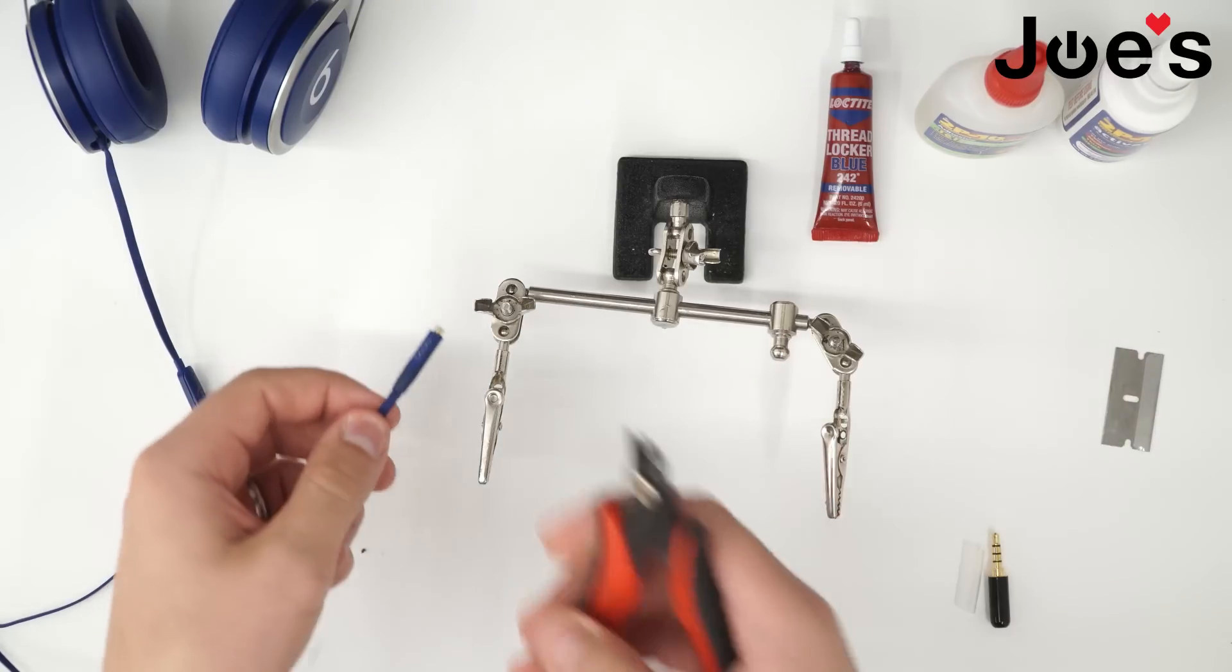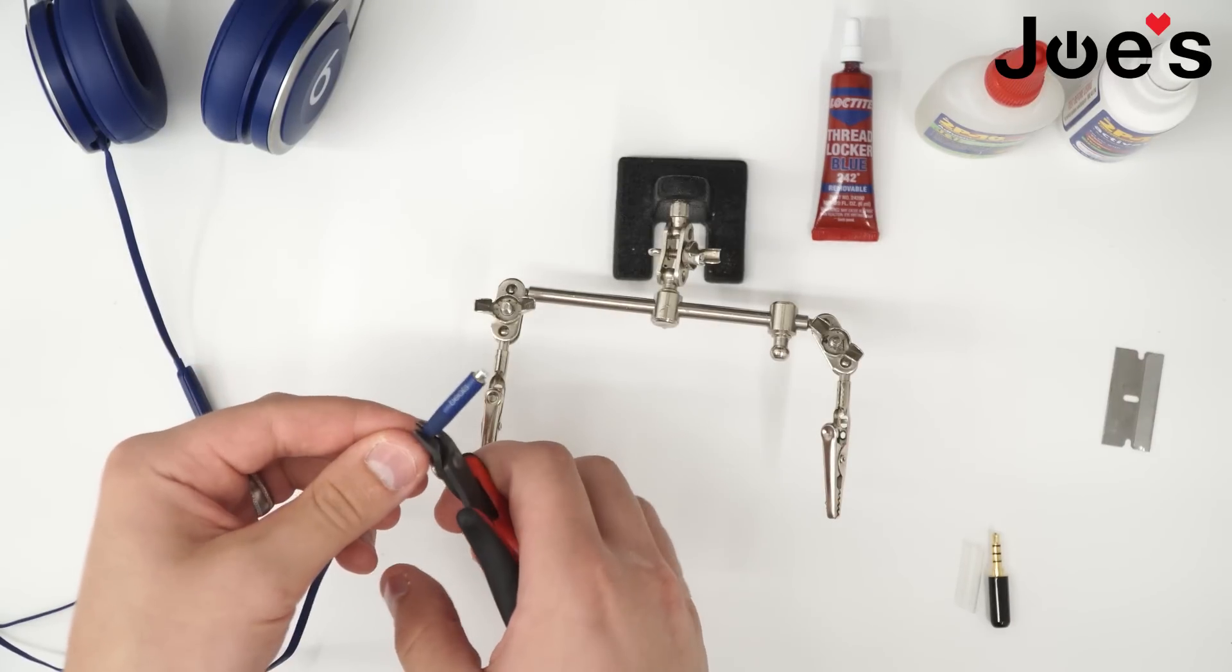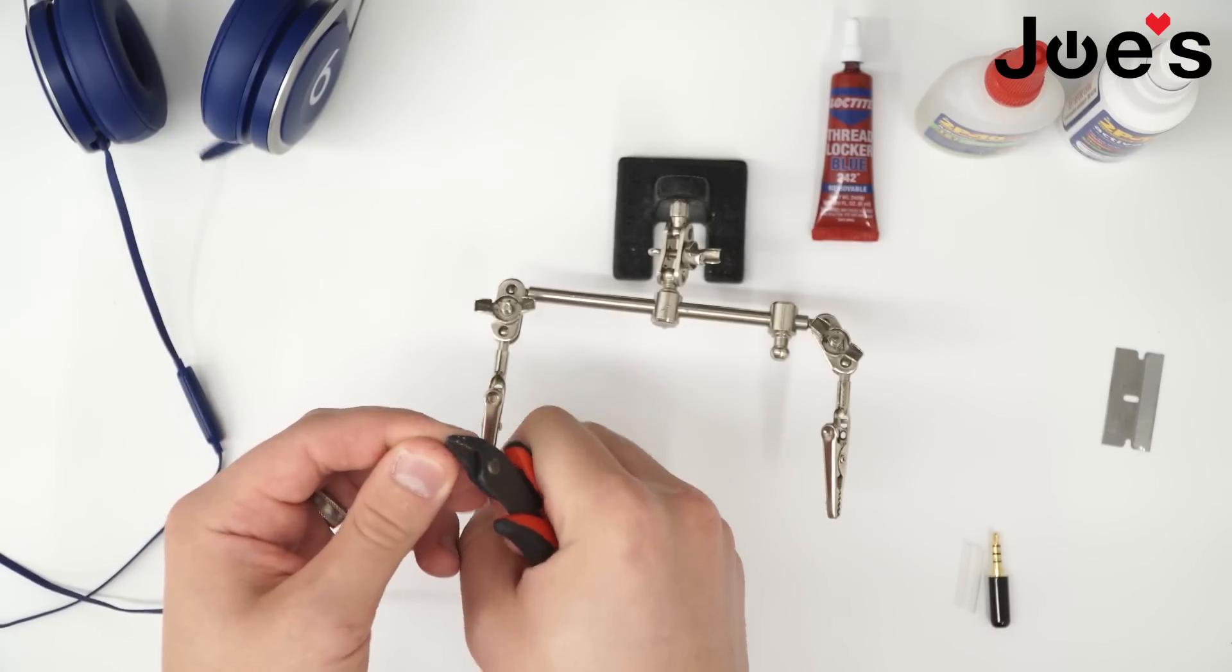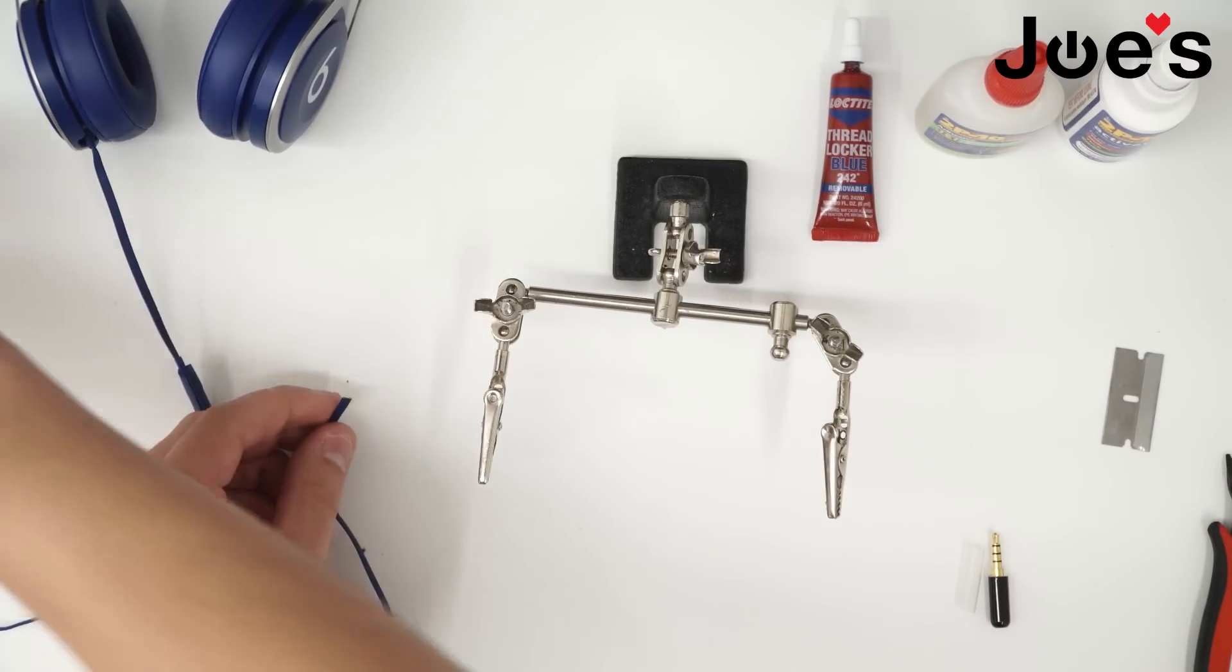First grab some pliers, snip off the end of the jack. You can always toss that.